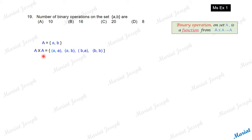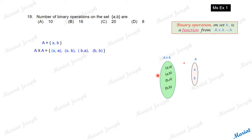Now, to find the function from A cross A to A, let's have the arrow diagram. The domain should have all the possible ordered pairs: AA, AB, BA, and BB. The binary operation star is supposed to be a function, so corresponding to each of these ordered pairs, we should choose one unique outcome. How many ways is this possible?